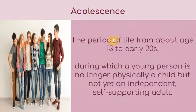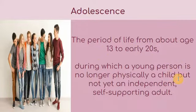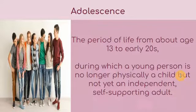Adolescence refers to a period of life from about the age of 13 to early 20s, during which a young person is no longer physically a child, but not yet an independent self-supporting adult. It's like the middle path — physically you are already developed, however in terms of supporting yourself, you still rely on your parents, such as getting your allowance.